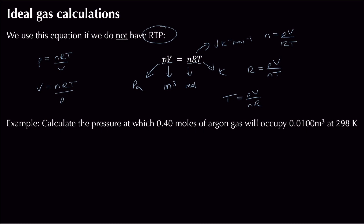Let's look at an example. We're asked to calculate the pressure at which 0.4 moles of argon gas will occupy 0.01 m³ at 298 K. I know I need the ideal gas equation because I'm not given room temperature and pressure, nor the molar gas volume.